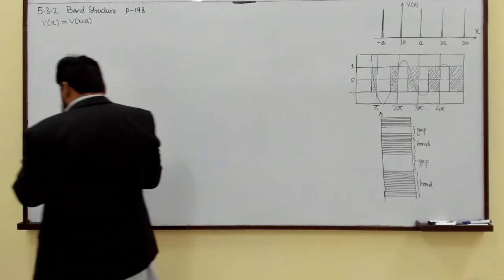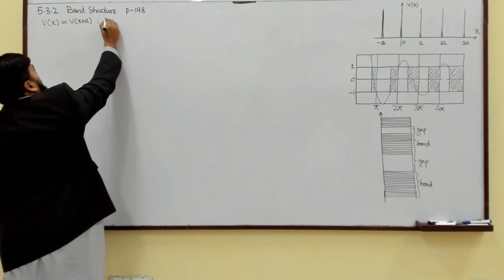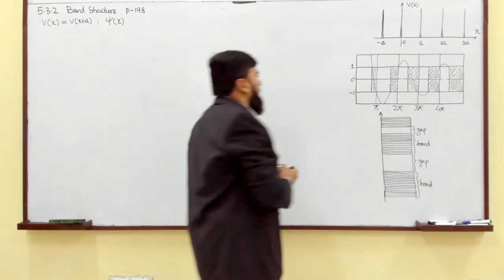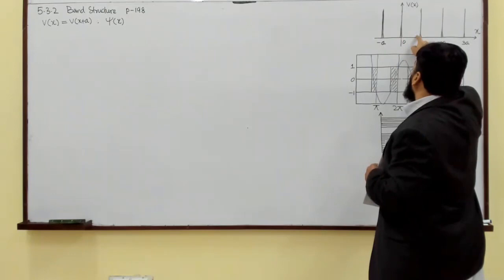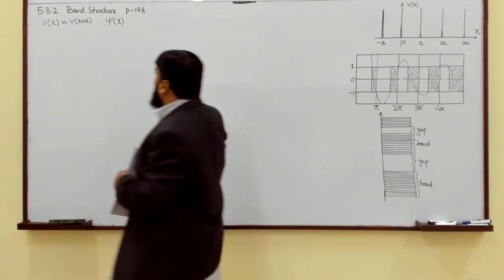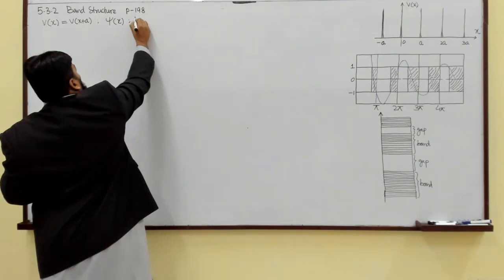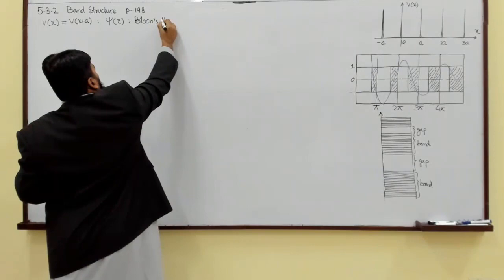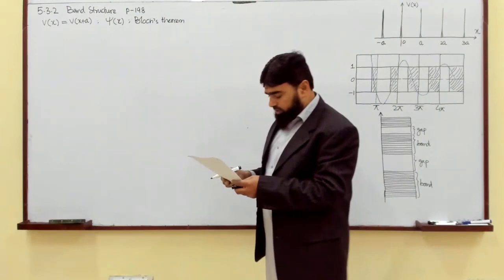We will discuss what happens to our wave function. For example, our wave function at the reference point or starting point is ψ(x). What will happen to this wave function when it moves to another atomic site? To understand this, we will discuss Bloch's theorem.